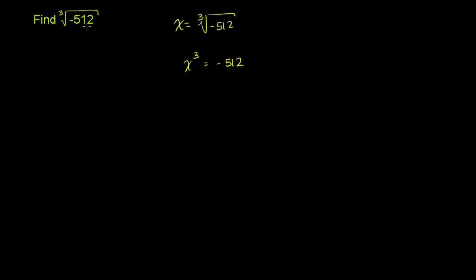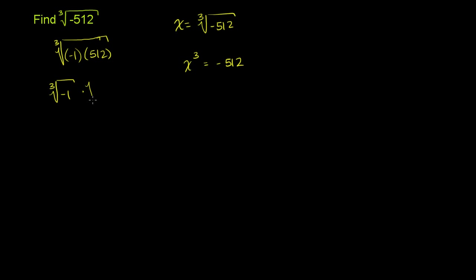If it doesn't jump out at you immediately what we have to raise to the third power to get negative 512, the best thing to do is a prime factorization. Before we do that, let's think about the negative part. Negative 512 is the same thing as the cube root of negative 1 times 512, which is the same as the cube root of negative 1 times the cube root of 512.